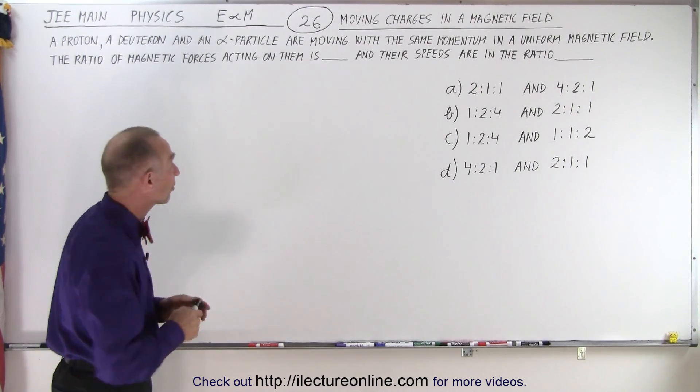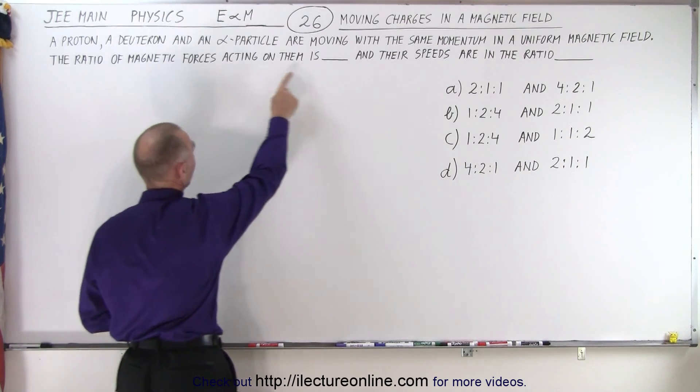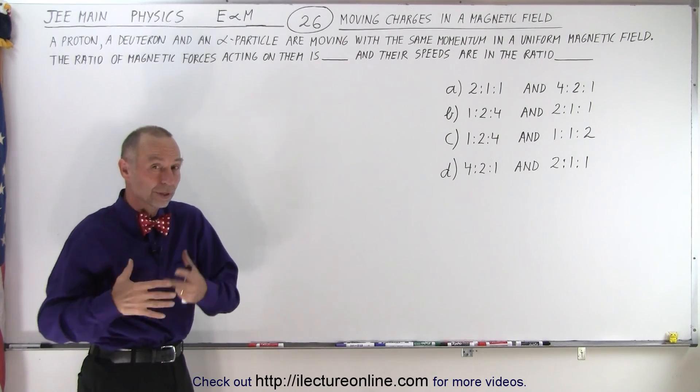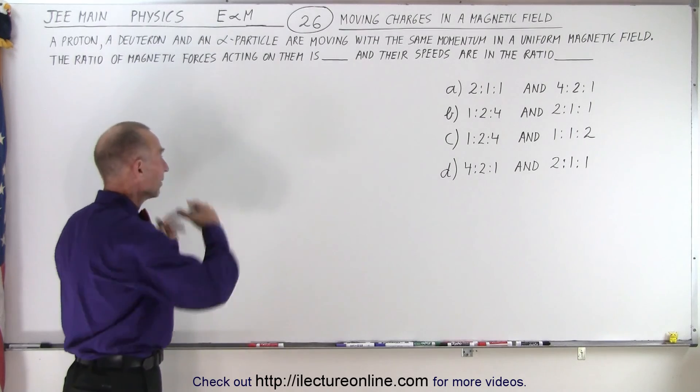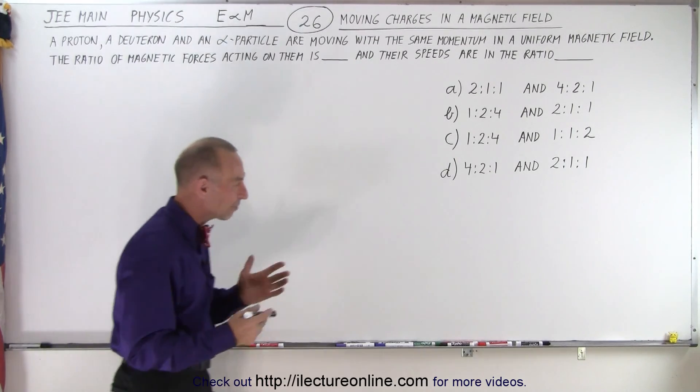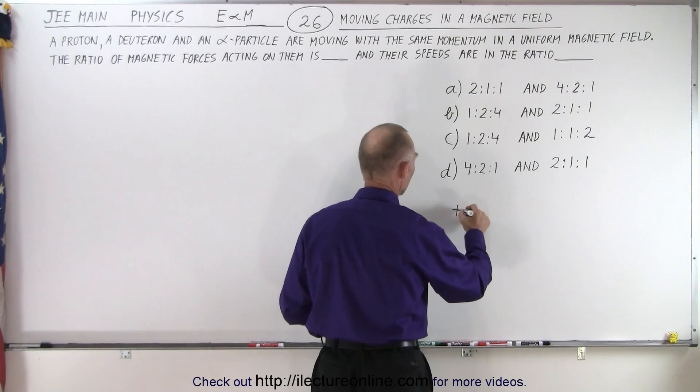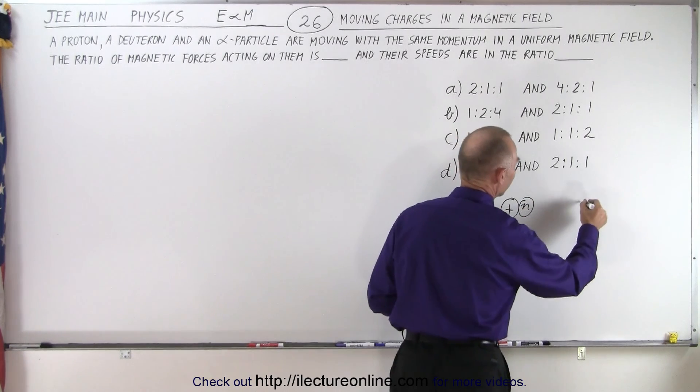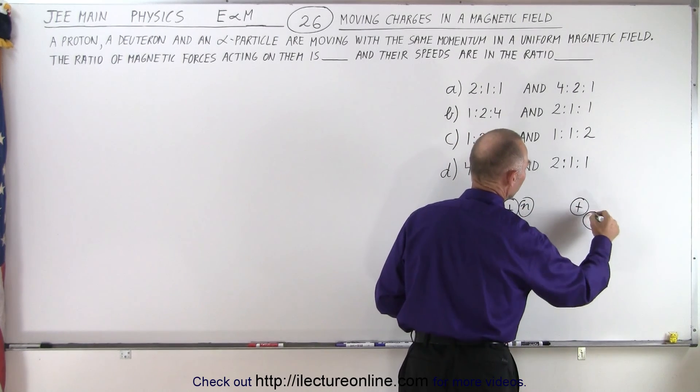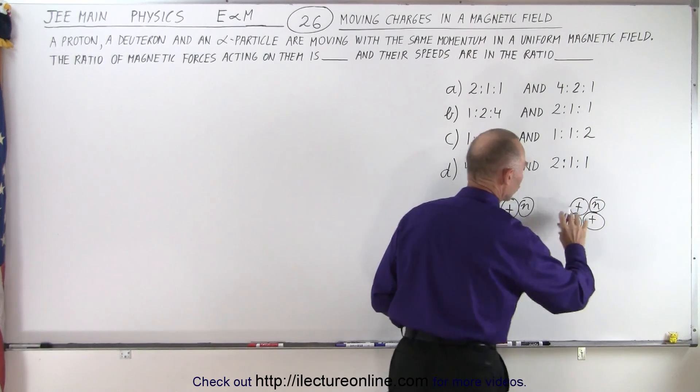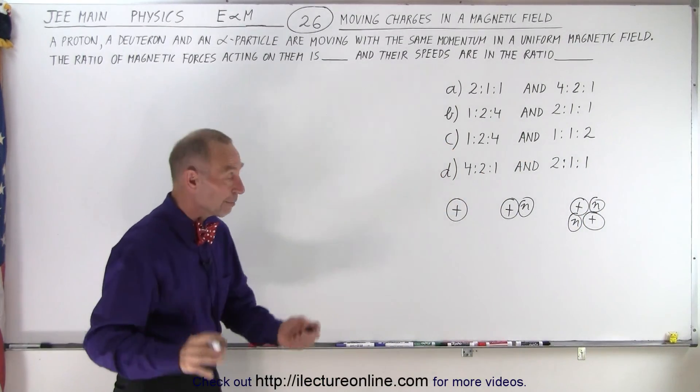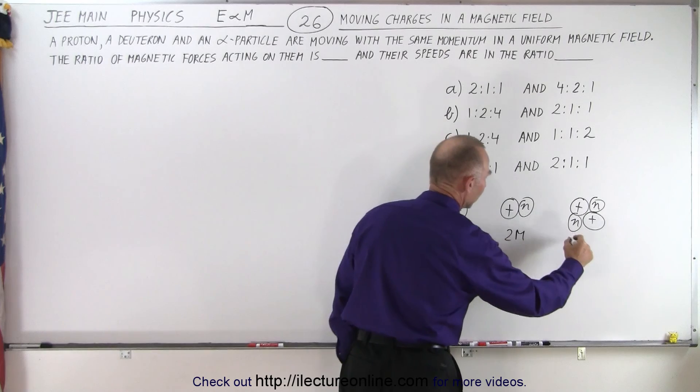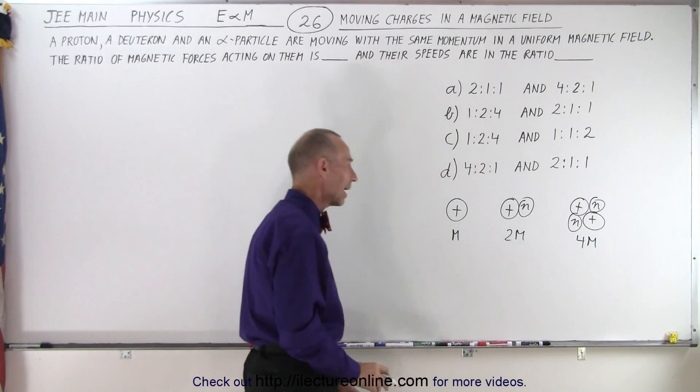Now it turns out, which is kind of interesting, that they put the ratio of the magnetic forces first and then their speeds in the ratio next. And that's a little bit confusing because I would want to work with their speeds first before I work on their forces. So we have three particles. We have what we call a proton. We have a deuteron which is a proton with a neutron. Then we have an alpha particle which has two protons and two neutrons. Now the ratio of their masses are as follows. This one has mass m, this one has mass 2m, and this has mass 4m.